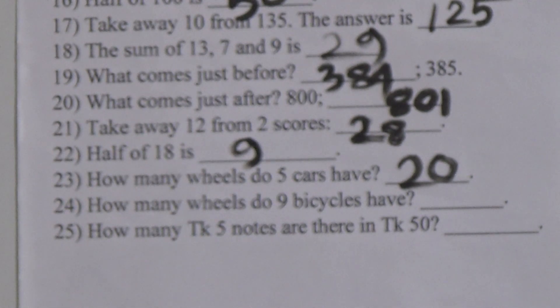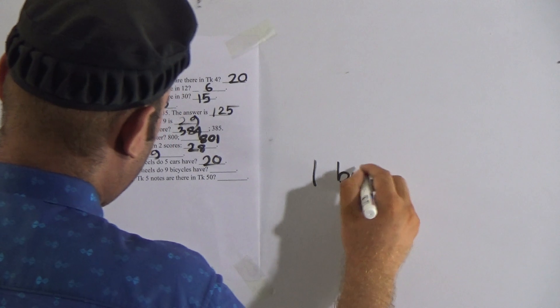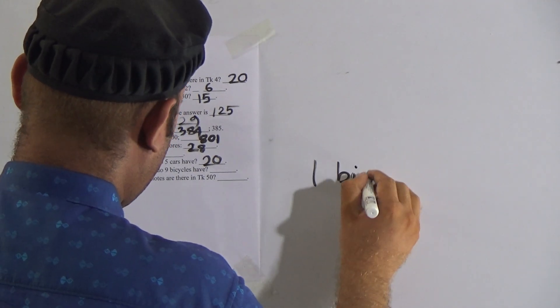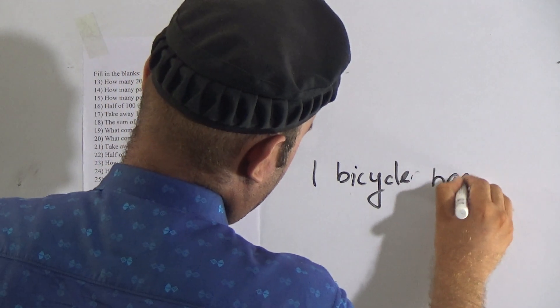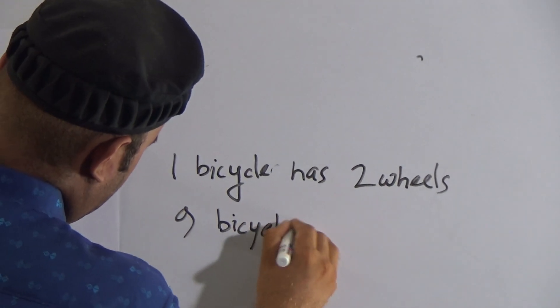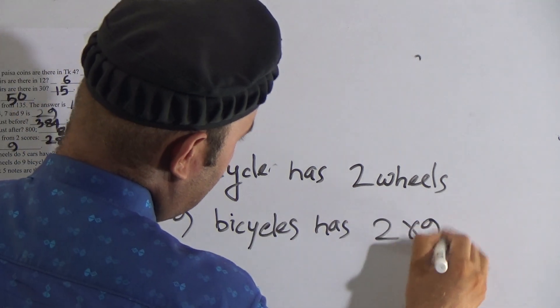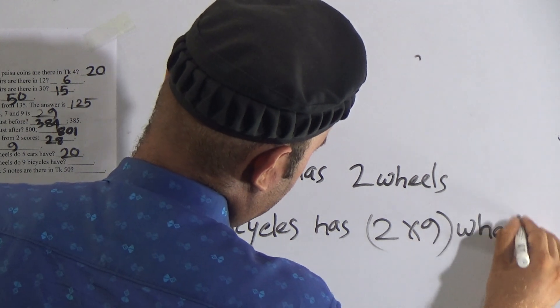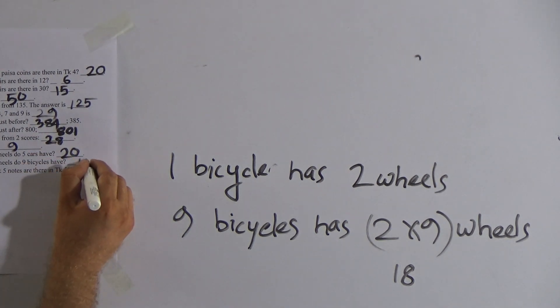Now number 24: how many wheels do 9 bicycles have? We know that 1 bicycle has 2 wheels. So 9 bicycles have 2 multiplied by 9 wheels, which makes 18 wheels. The answer is 18.